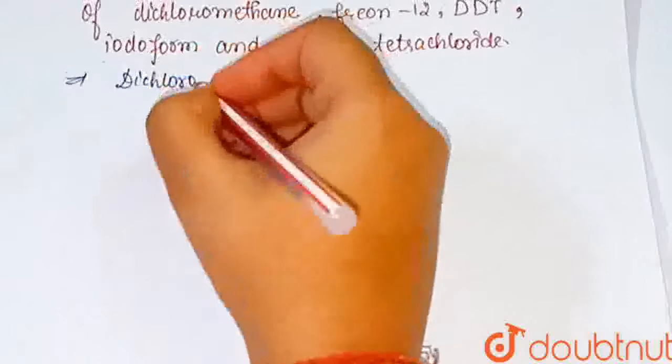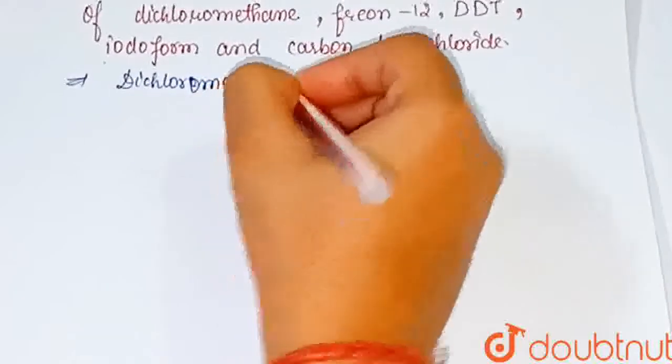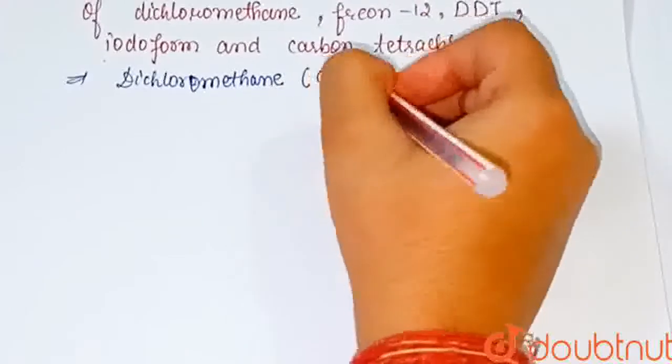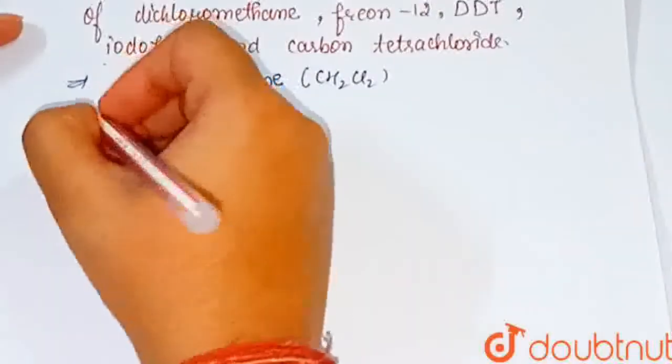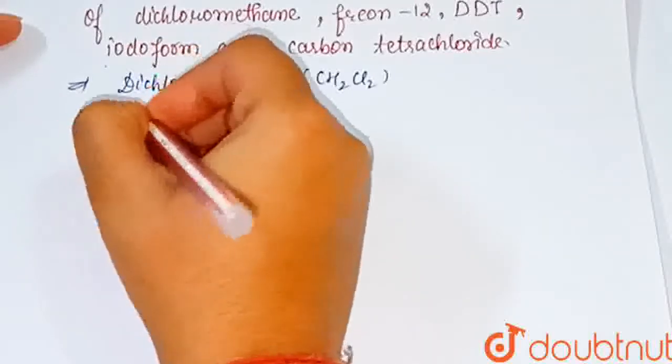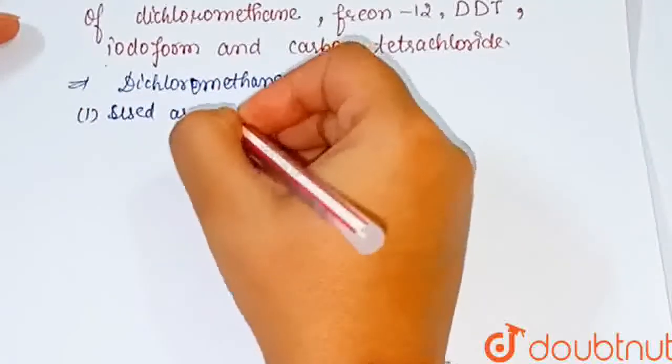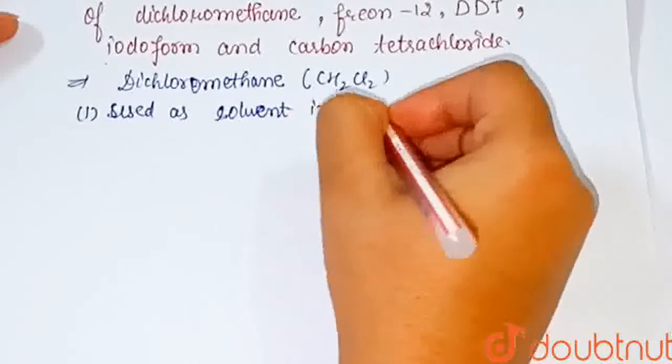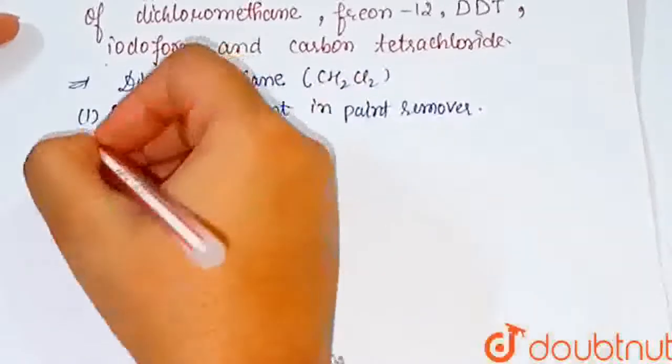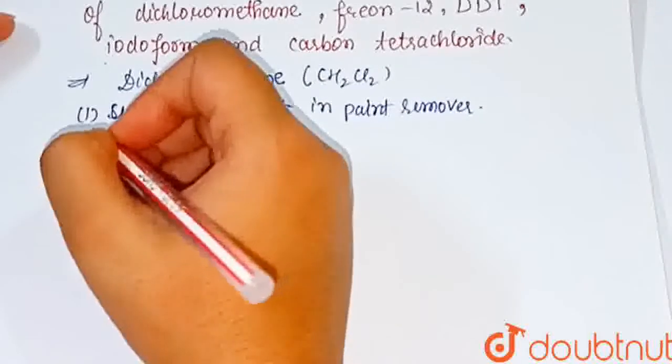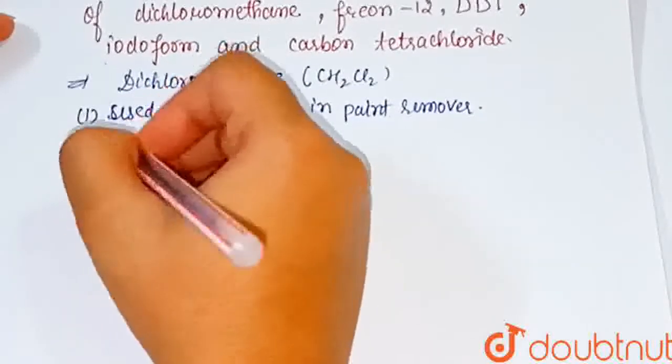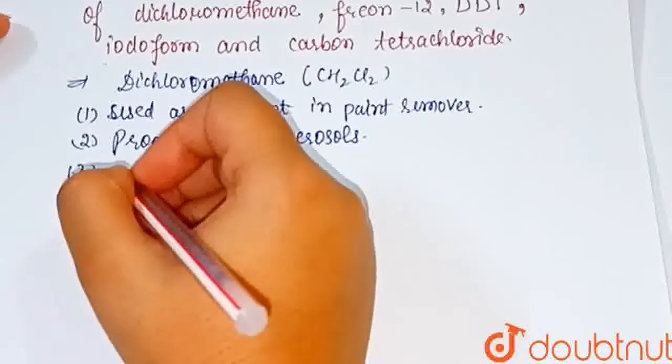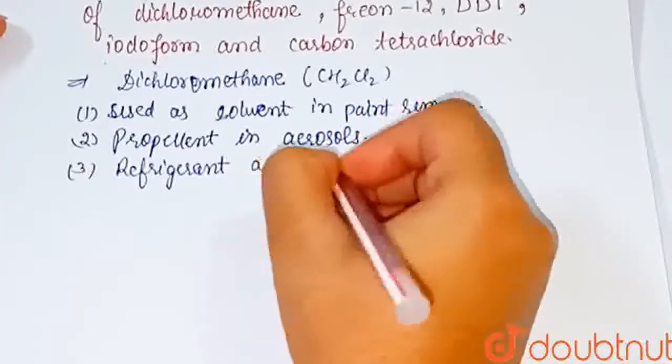First we see the uses of dichloromethane which is CH2Cl2. It is used as solvent in paint remover, second it is used as propellant, third it is used as refrigerant and de-waxing agent.